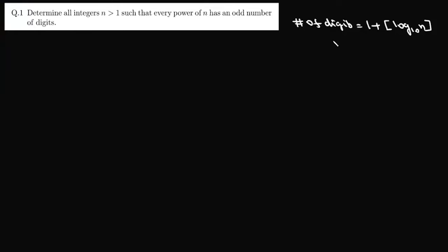Now we want every power of n to be an odd number, so this n itself should have an odd number of digits. It will have an odd number of digits if this log n base 10 is an even integer. So we can write this log n base 10 as 2k plus its fractional part f, where k is an integer and f is a fractional part, so its value will lie between 0 and 1.